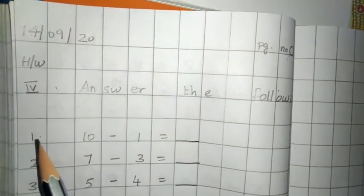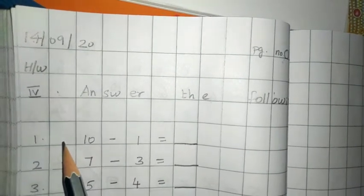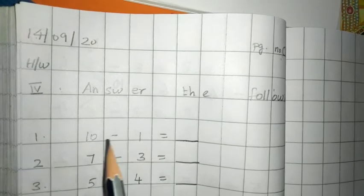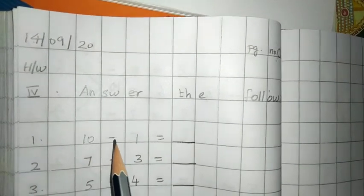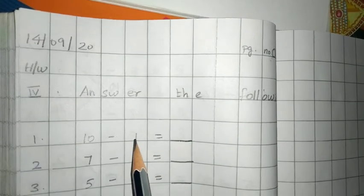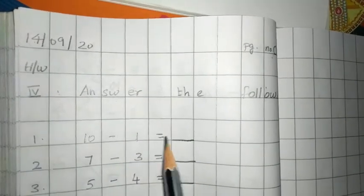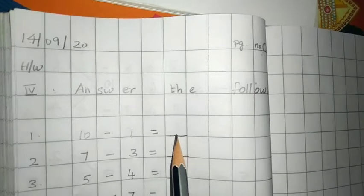Then start with the first problem. Write number one, leave one box, then write the problem. In each box, write one number, then put the minus symbol, then write the next number, then equal to dash. In the dash, you have to write the answer.